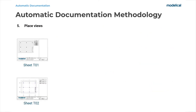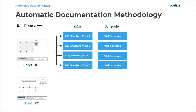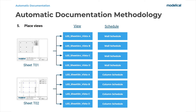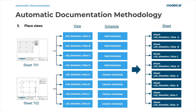The fifth step consists of placing the views, tables and legends on the sheets. To do this, I have to previously create some sheet templates with the desired layout of views and schedules. For example, in type 1 I have a view and schedule positioned in a particular way, and in type 2 they are arranged differently. So I want to place views and schedules according to the first layout, and other views and schedules according to another layout. With one click, through a Dynamo routine, I place the views and schedules on the sheets in the way the sheet template marks.